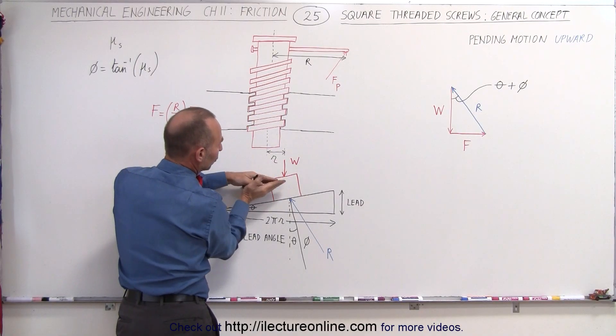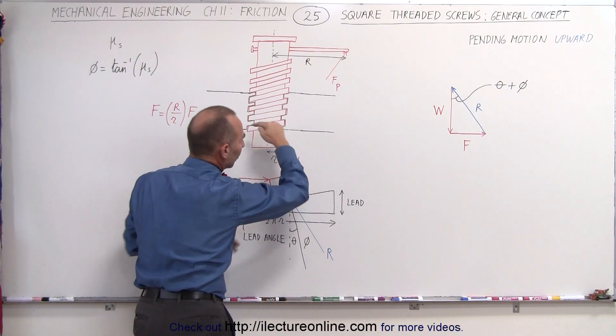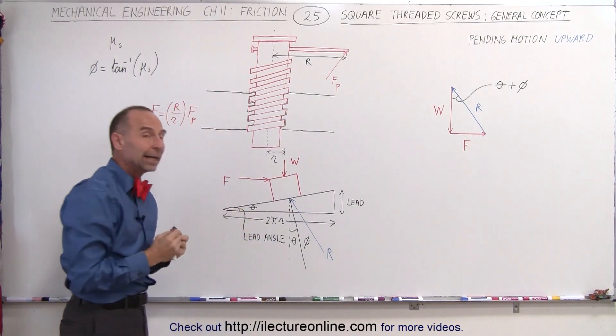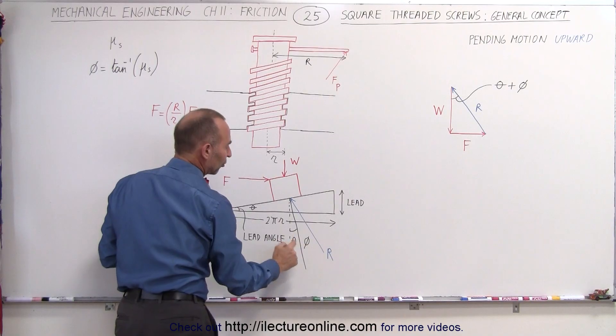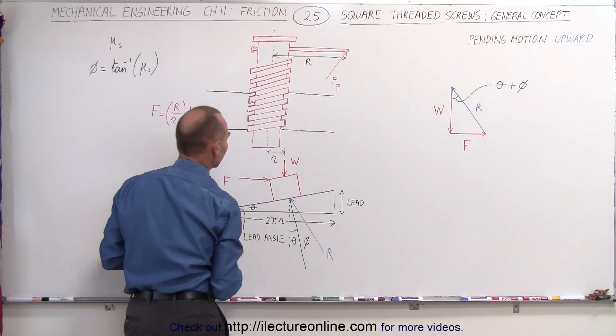we can see that the thread of the screw will be pushing against the thread of the object that it's embedded in. So the reactionary force will go in this way, which is the sum of the normal force plus the friction force.